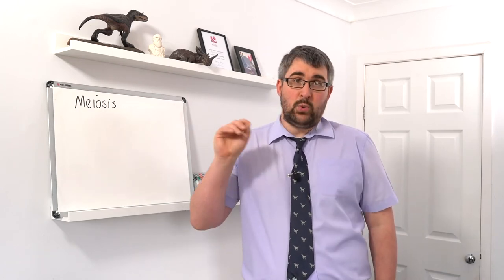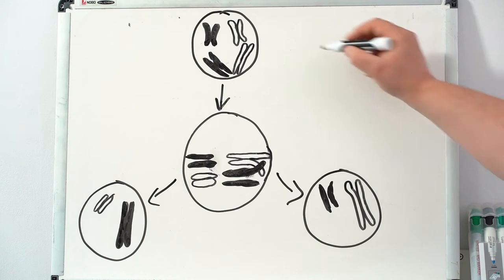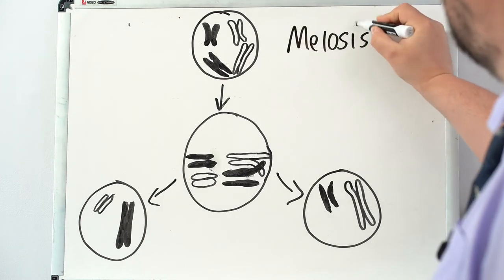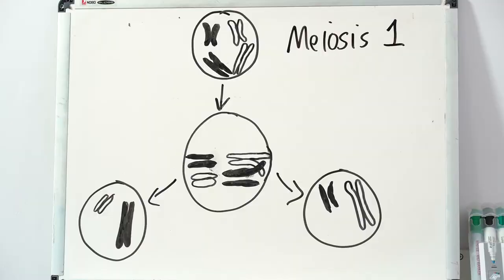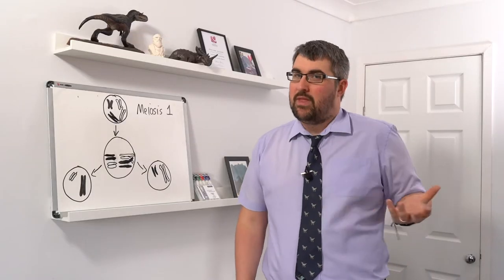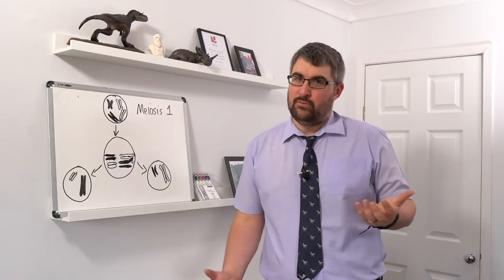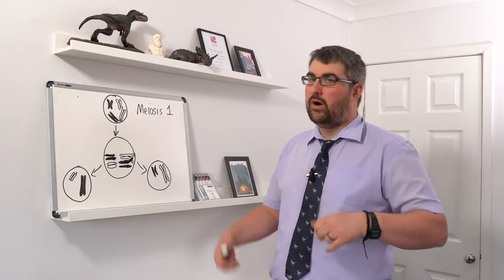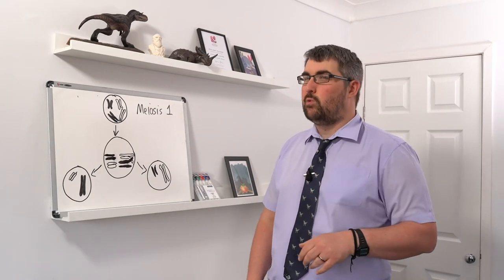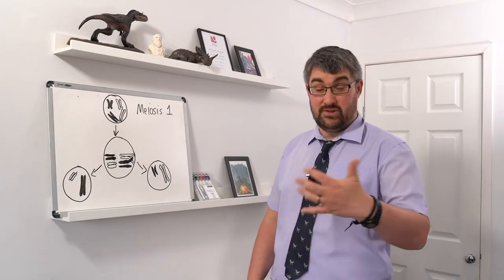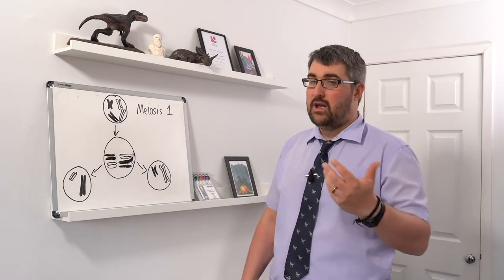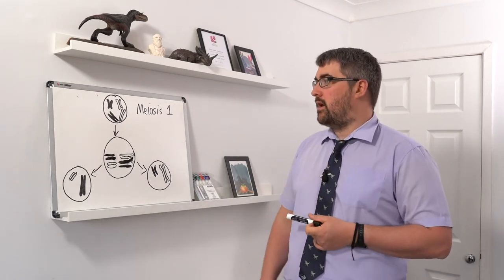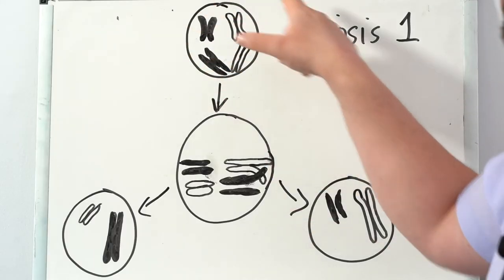Meiosis is split into two rounds: meiosis I and meiosis II — another key difference from mitosis, which has only one round of division. In meiosis I, the cell has visible chromosomes — identical sister chromatids joined at the centromere. I've drawn two sets of chromosomes: the dark ones are paternal (from your father) and the white ones are maternal (from your mother).